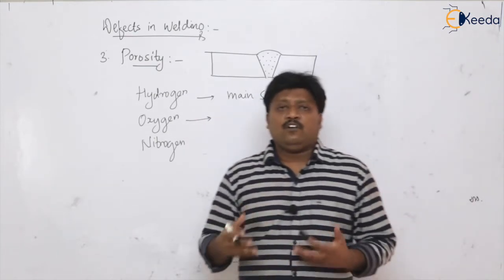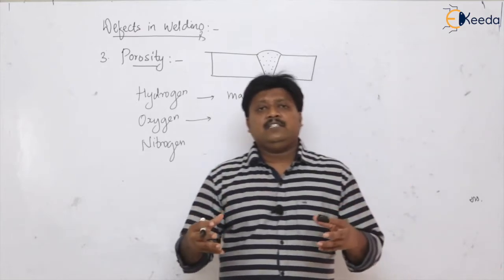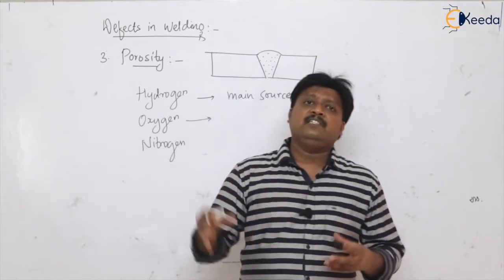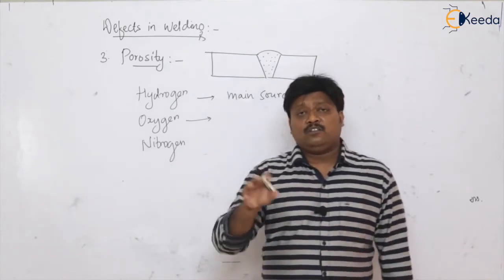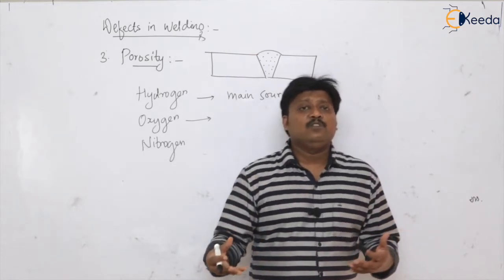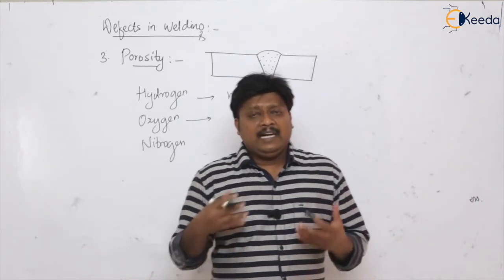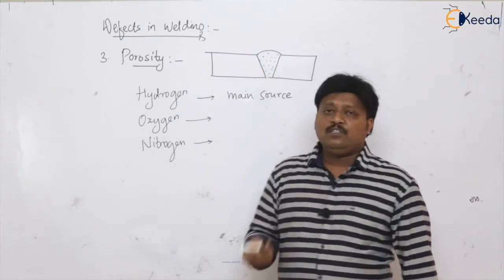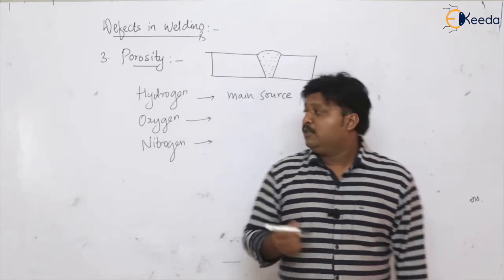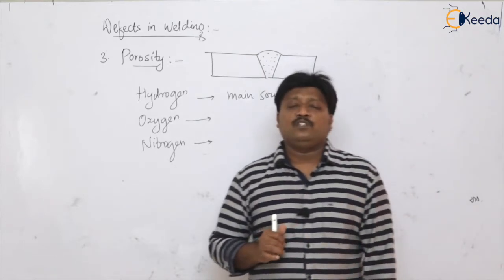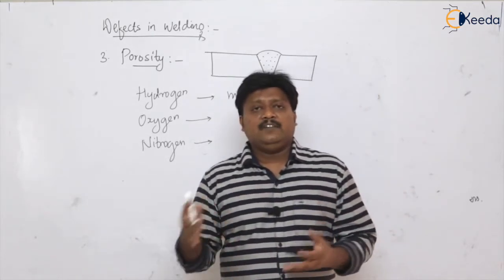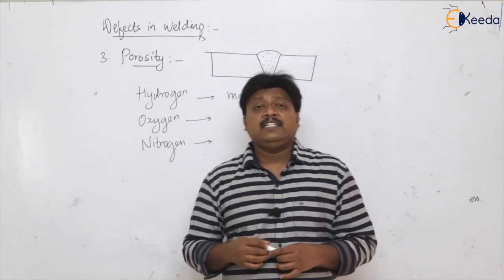Oxygen can come from flux coatings on the electrode, or it can form oxides with the base metal — these two sources allow oxygen to enter the weld pool. Nitrogen generally comes from the atmosphere and becomes soluble in the weld pool, causing porosity. Any gases entrapped in the weld pool reduce the strength of the weld.